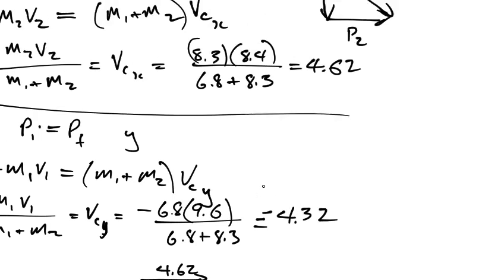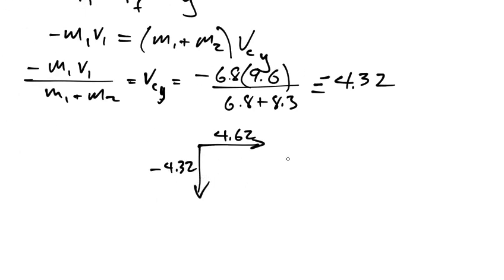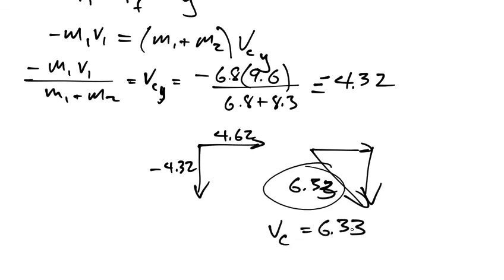So therefore, yeah, 4.62. So therefore, what does this give me? If I add those head to tail, I'm going to get my final velocity. And so all I have to do now is use Pythagoras. So I'm going to go 4.32 squared. And then I'm going to go 4.62 squared. I'm going to add those. And then I'm going to take the square root. And I'm getting 6.32. And so, or 6.33. So my final velocity of the couple is 6.33.